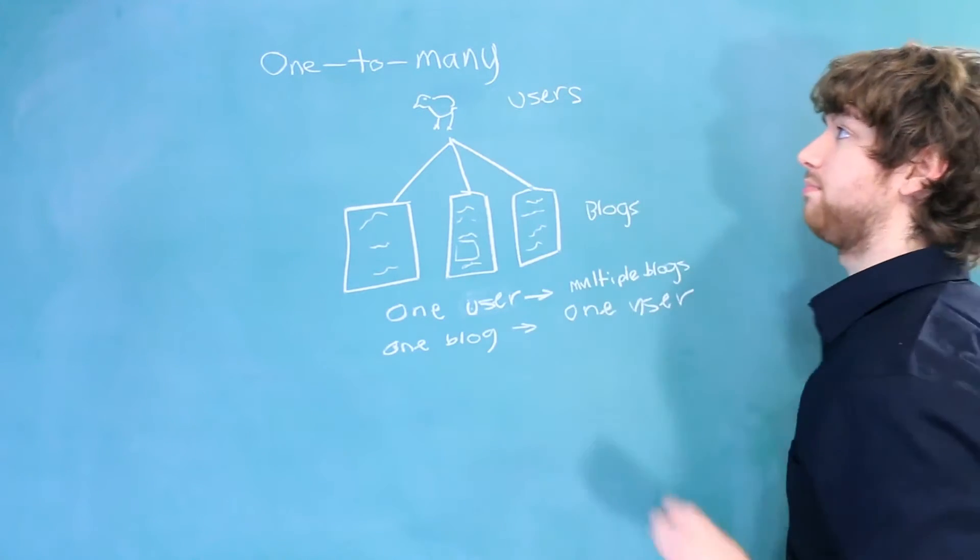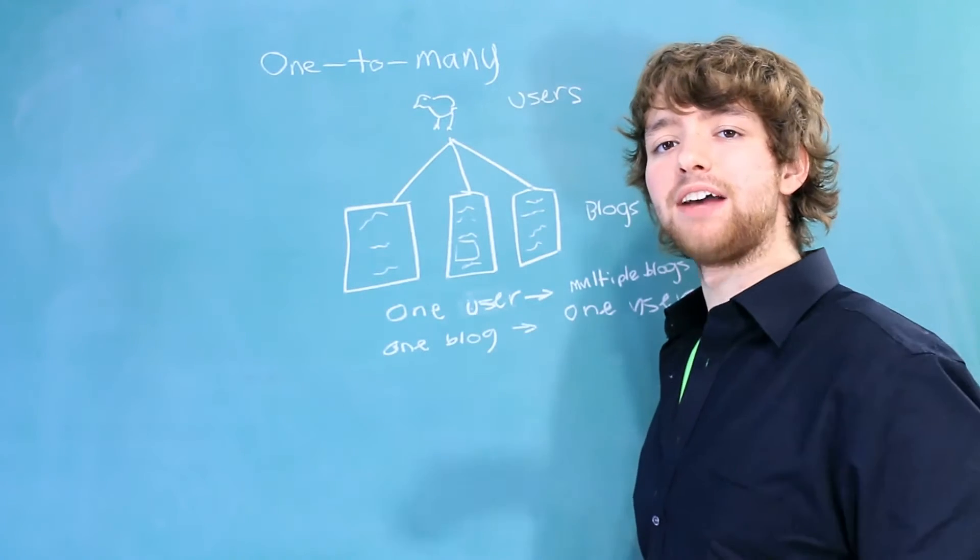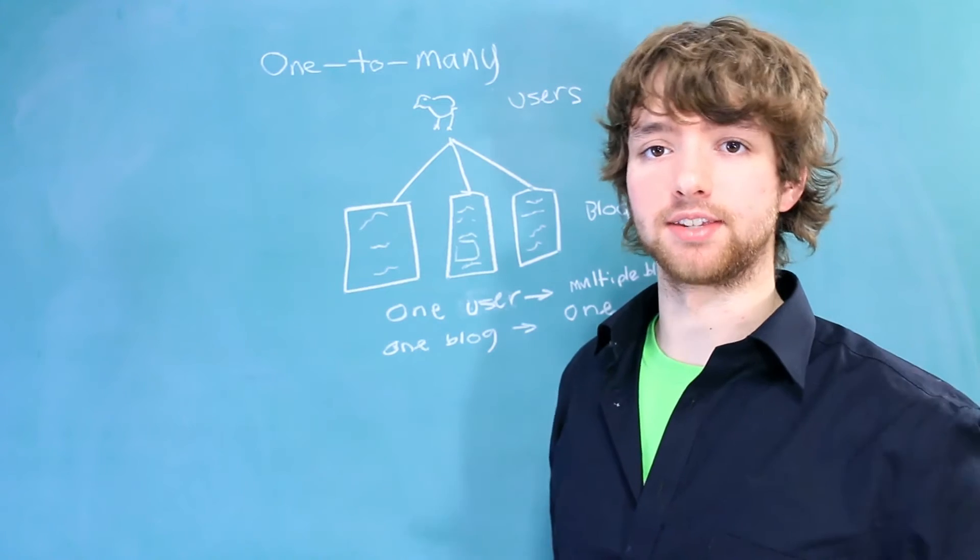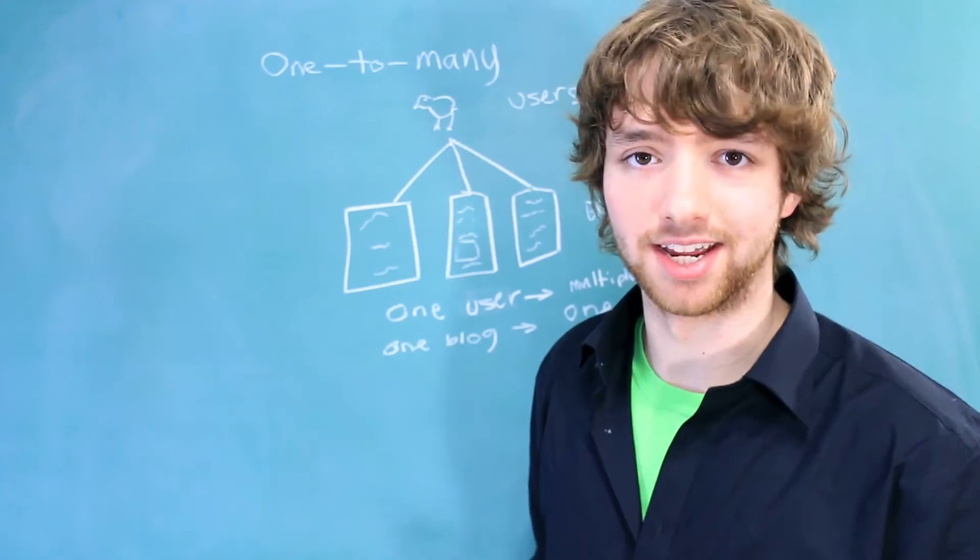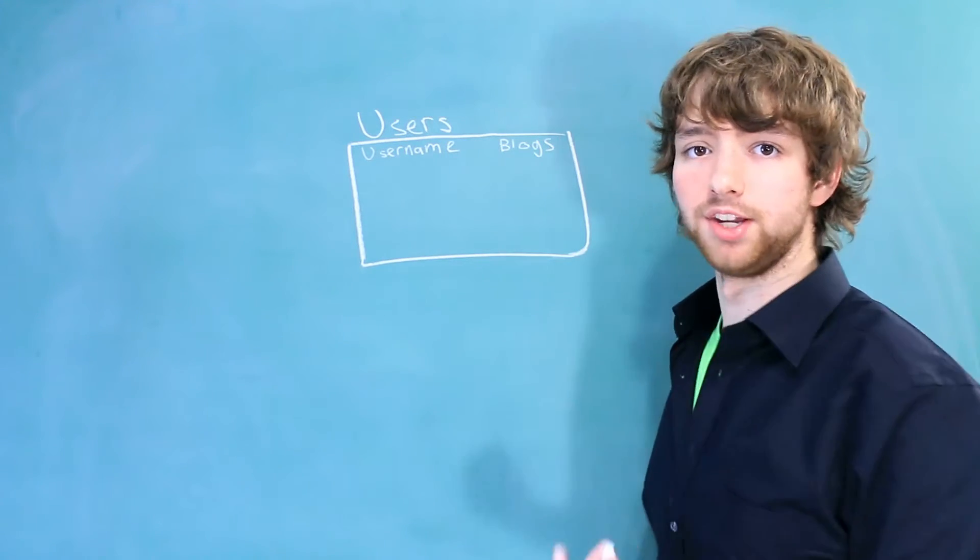But for now, let's focus on one-to-many and learn how to design this in a database. Before we dive into the actual way to design this, let's go through some incorrect ways to design this that are common amongst improperly designed databases. This is the first incorrect way to design a one-to-many relationship.